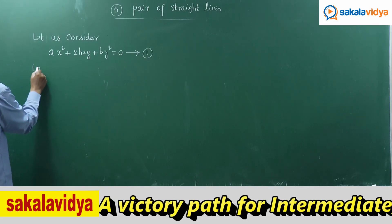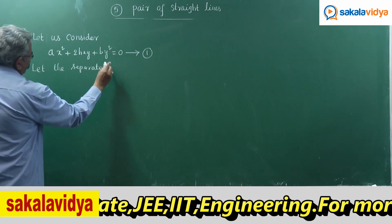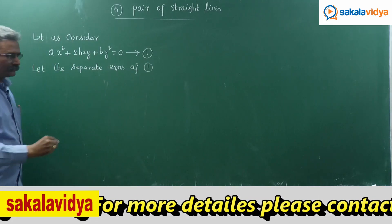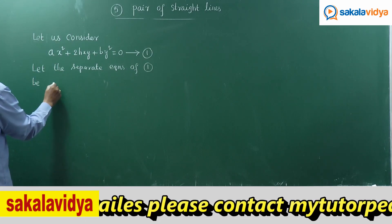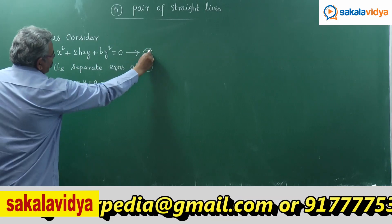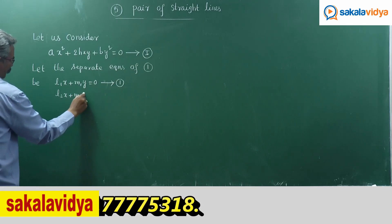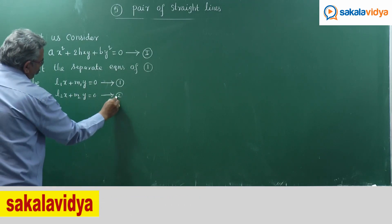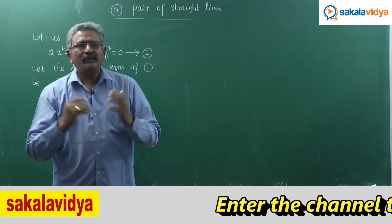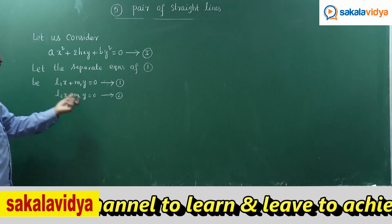Let the separate equations of equation 1 be: L1x + m1y = 0, say equation ρ1, and L2x + m2y = 0. That means if it is a pair of straight lines, it should be factorized into two linear equations: L1x + m1y = 0 and L2x + m2y = 0.